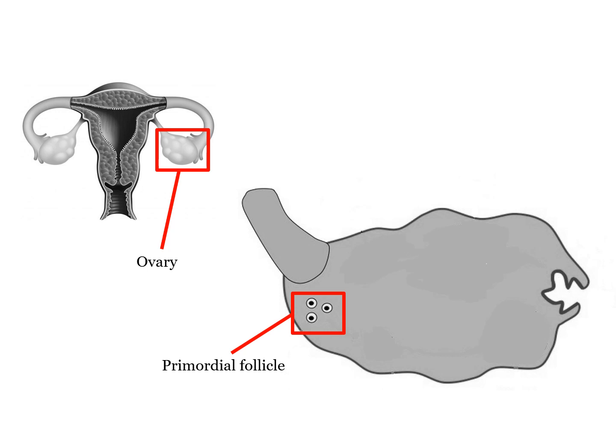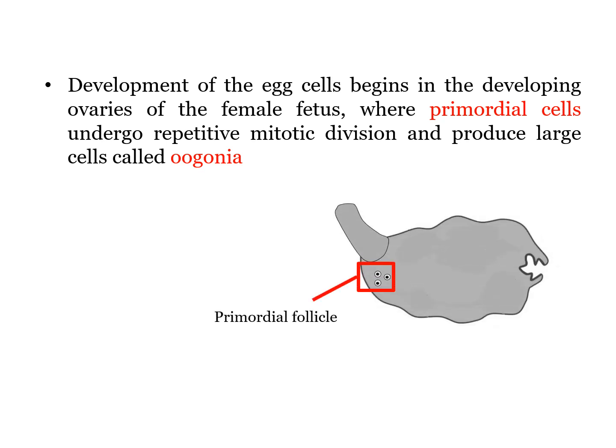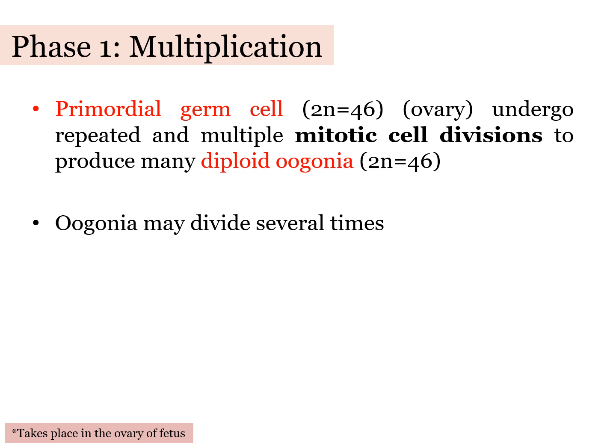The development of eggs begins during the fetal stage of the female. As the female fetus grows, the eggs in her ovary start to develop. The primordial cells undergo repetitive mitotic division, producing larger cells called oogenia. This process is known as phase 1 of oogenesis, and bear in mind that this phase starts during fetal development.